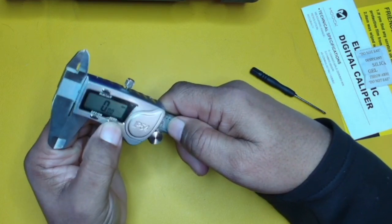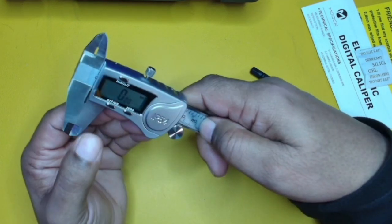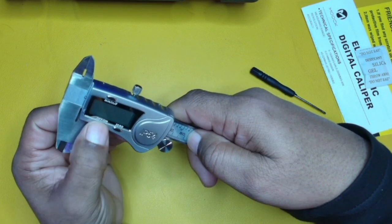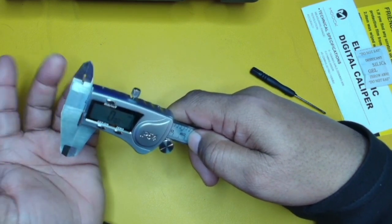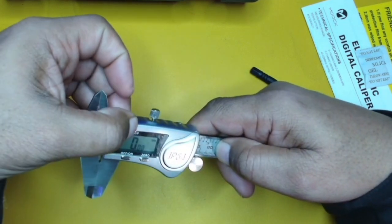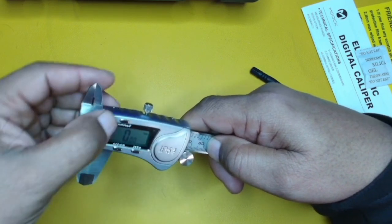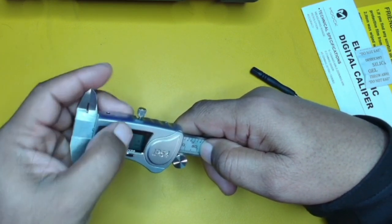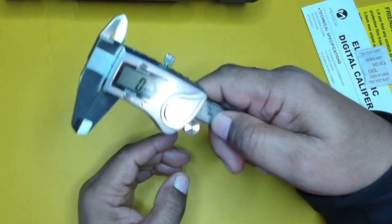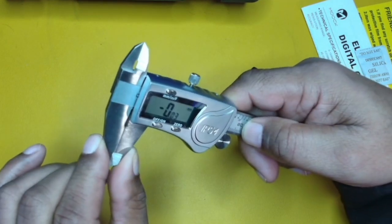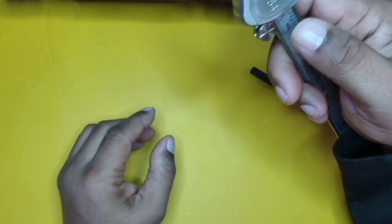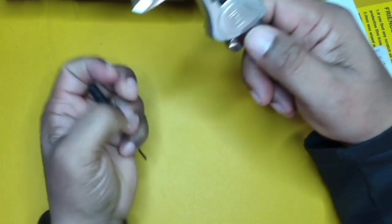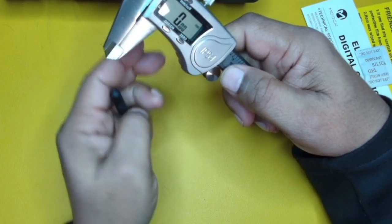So you guys see here I can zero this out. So now it is zeroed out. And of course, we can turn this on and off because now it has a functioning battery. I can also switch between millimeters to inches to fractions and so on. So because this is at zero and you see the jaws are completely closed, let's get that back to zero here real quick. So that's at zero.